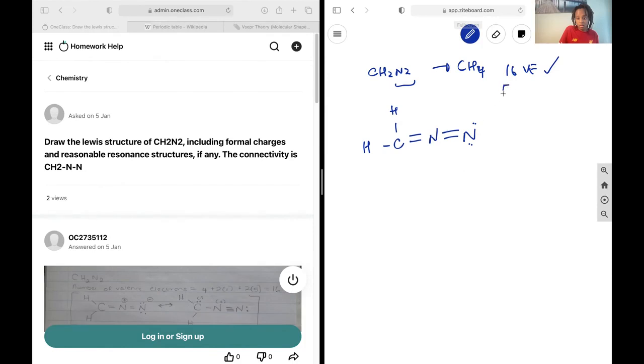Let's check our formal charges. On the hydrogens we have 1 minus 1 equals 0. On the carbon we have 4 minus 4 equals 0. On nitrogen 1 we have 5 minus 4 leaving a positive 1. On nitrogen 2 we have 5 minus 4 minus 2 leaving us with a negative 1. So we'll have a negative charge here and a positive charge here.